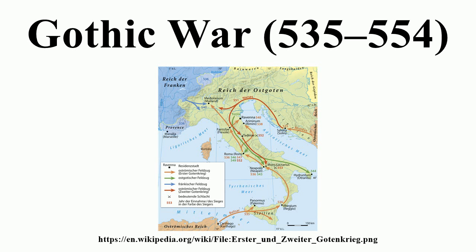While Justinian tried to secure the neutrality of the Franks by gifts of gold, Belisarius first landed at Sicily, which was strategically located between the now Roman Africa and Italy, and whose population was well disposed toward the empire. The island was quickly captured, with the only determined resistance overcome by late December.